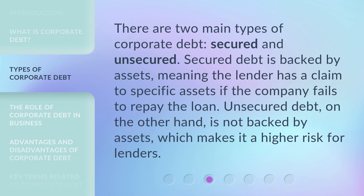There are two main types of corporate debt: secured and unsecured. Secured debt is backed by assets, meaning the lender has a claim to specific assets if the company fails to repay the loan. Unsecured debt, on the other hand, is not backed by assets, which makes it a higher risk for lenders.